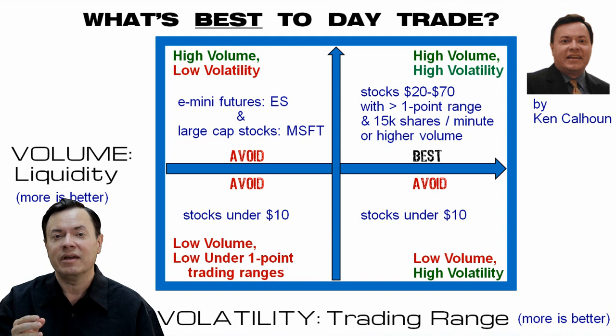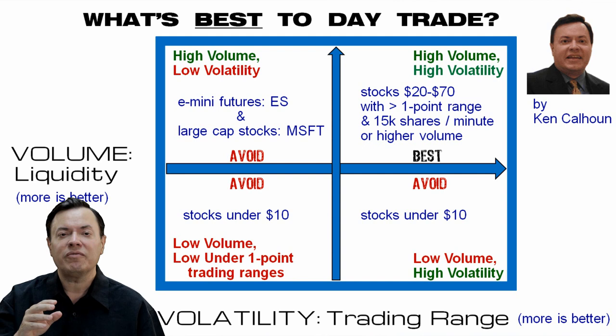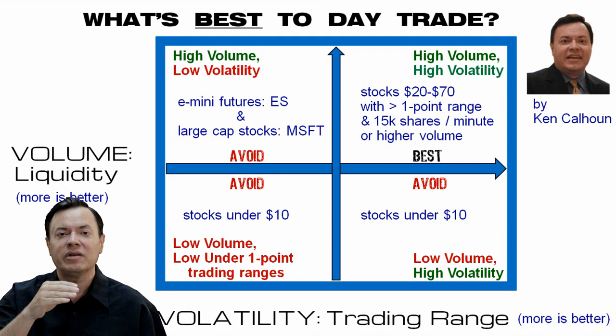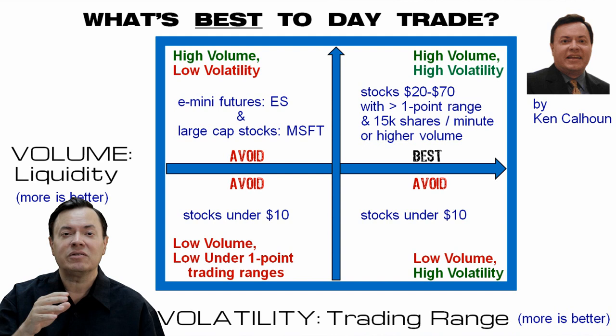When it comes to day trading, give preference to instruments in the upper right quadrant — high volume, high liquidity, and high volatility. Instruments that trade at least 15,000 shares a minute and have at least a one-point trading range. You can trade during 9:30 to 10:00 or 10:15 and potentially get 30 or 50 cents out of them without having to trade thousands of shares.